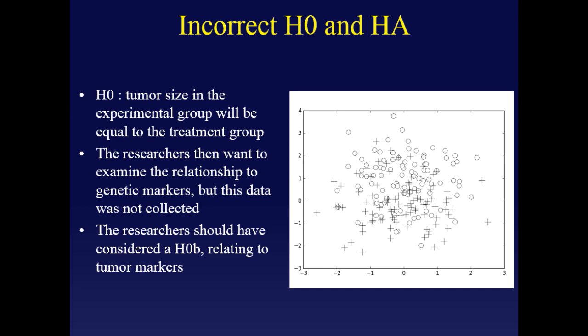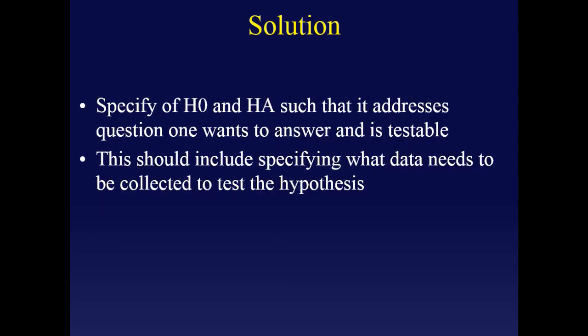Almost everyone has seen this happen. It might not sink your ship, but it can mean a weekend spent re-doing a chart review instead of with your family. The solution is to specify your null and alternative hypothesis as clearly as possible in a mathematically testable way, and to explicitly include the measurements you're going to use to measure them.